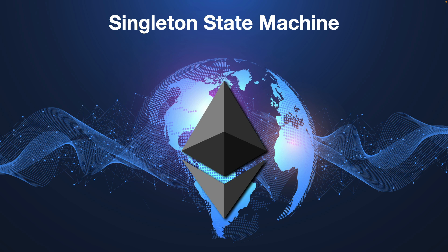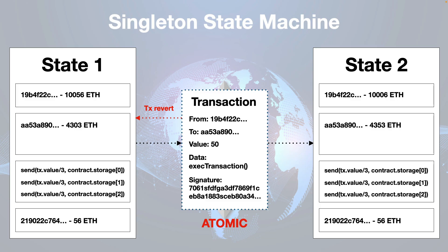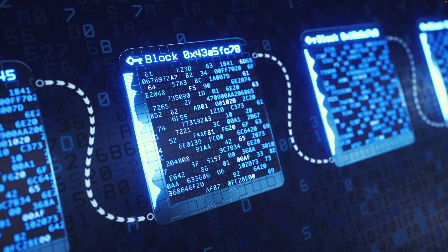From a computer science perspective, Ethereum is known as a deterministic state machine — it's made up of a globally accessible singleton state. The EVM constantly applies changes to that state, and changes can only be initiated by an externally owned account, which is a wallet holder. All of these state changes get synchronized to a blockchain — that's really what a blockchain is at the end of the day: it's just a data structure.